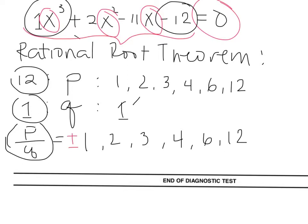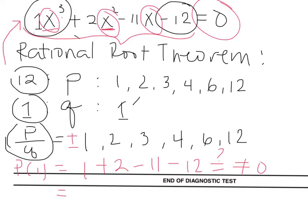Let's start with 1 — let's see if p of 1 equals 0. So 1 cubed is 1, plus 2 times 1 squared is plus 2, minus 11 times 1 is minus 11, minus 12. So 1 plus 2 is 3, then 3 minus 11 minus 12 is not equal to 0. Since it didn't work for 1, we have to try another number.